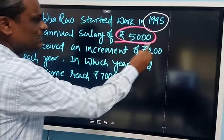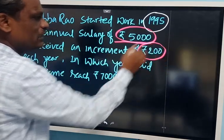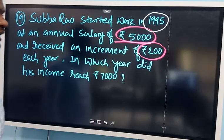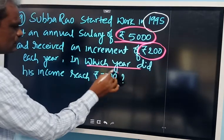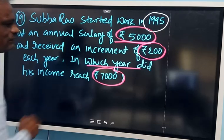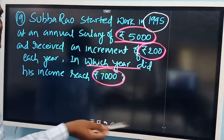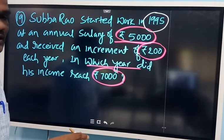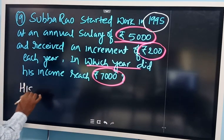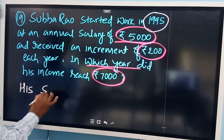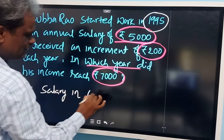This is Ubrow. His starting salary is 5000 and every year he gets an increment of Rs. 200. So in which year does he get a salary of Rs. 7000? That is the question. Starting he gets 5000, and every year he is getting a 200 Rs. increment, so the salary in consecutive years will be like this.